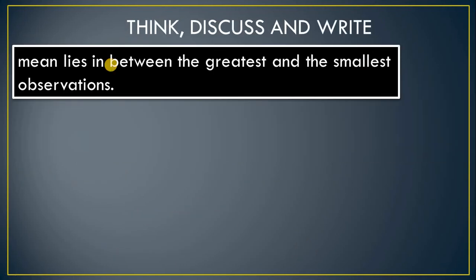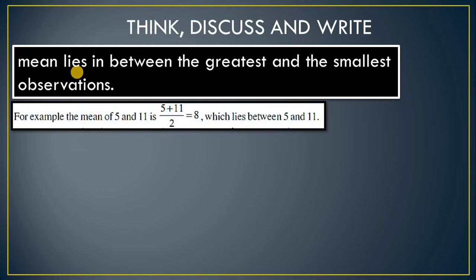Mean lies between the greatest and smallest number. As I told you, the mean is the between value. For example, the average of 5 and 11: their addition is 16, number of observations is 2, divide by 2 gives 8. So 8 is the middle value lying between 5 and 11.